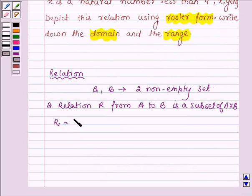That is R is a subset having ordered pair X and Y such that X belong to A and Y belong to B.